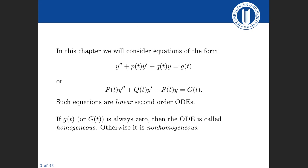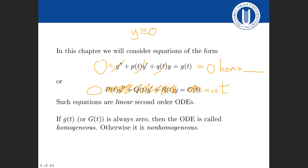To understand this, think about what happens if y is always equal to zero. If y equals zero, we cross off all y terms and just get zero on the left. If g is also zero, we end up with zero equal to zero — that's a homogeneous equation. If instead g was not always zero, say cos t, we'd have zero equal to cos t, which is not true for all t. So that equation is non-homogeneous.